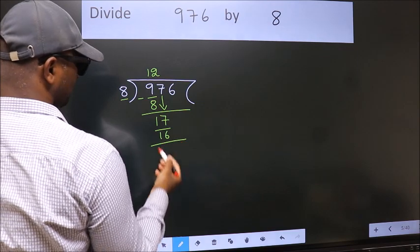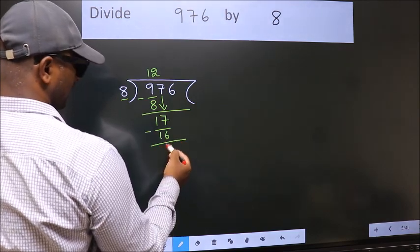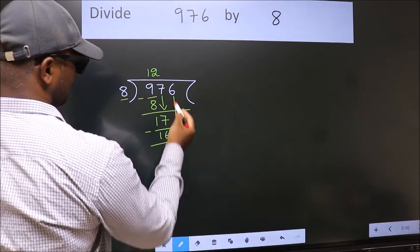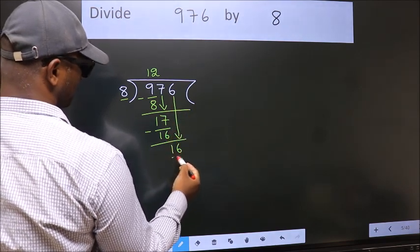Now, we subtract. We get 1. After this, bring down the beside number. So, 6 down. So, 16.